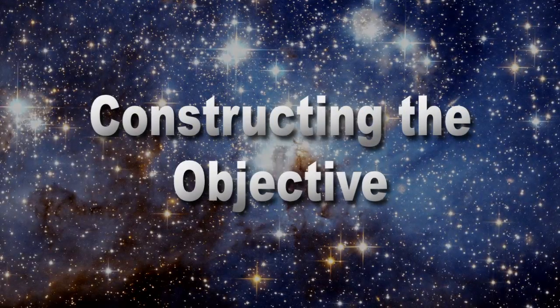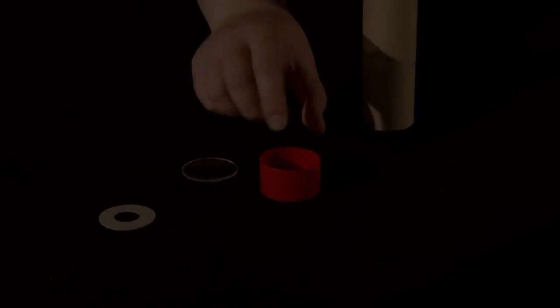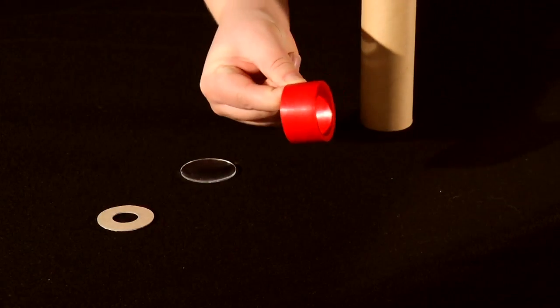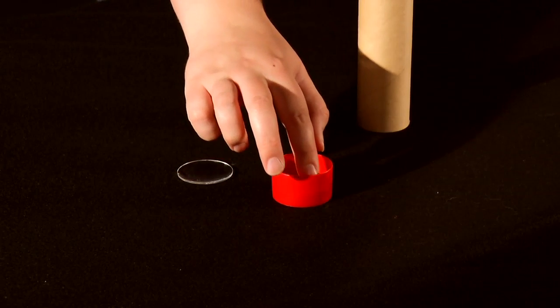First we will construct the objective end of the telescope, which points at the thing you want to look at. Start by placing the plastic cap on a table with the small lip on the bottom. If you have a cardboard washer, put it inside the plastic cap.